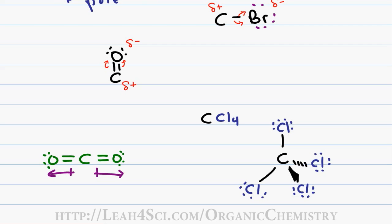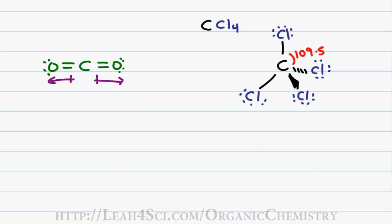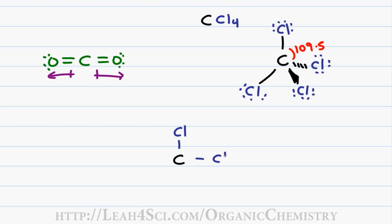Every bond is between a carbon and a chlorine atom and every bond is individually polar because chlorine is more electronegative than carbon and pulls the electron density away from carbon. But keep in mind that in a tetrahedron, we have four equidistant spaced atoms with a bond angle between them all of 109.5.